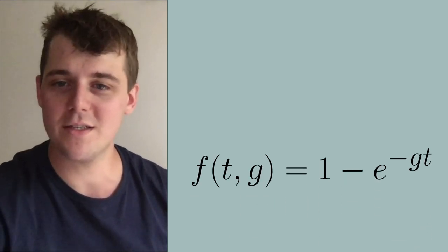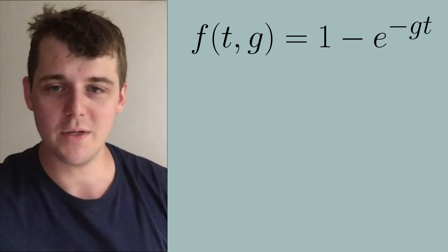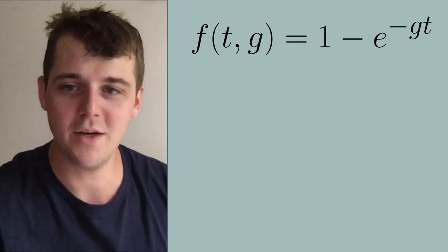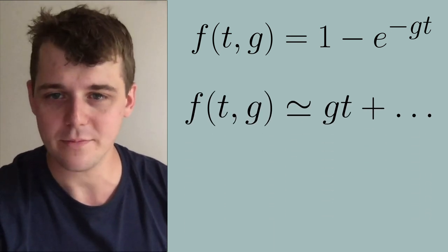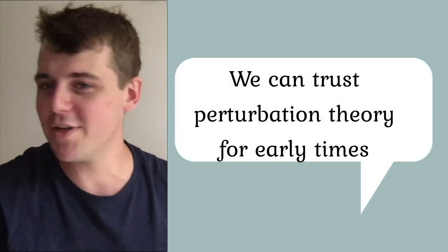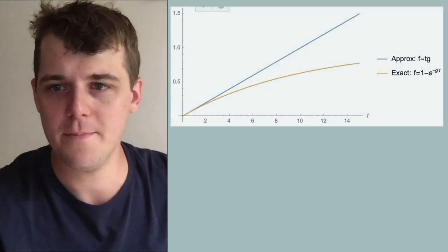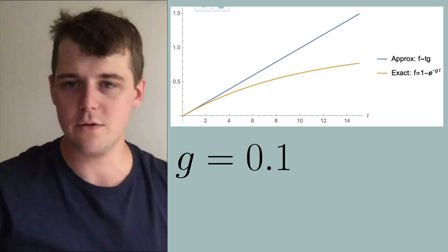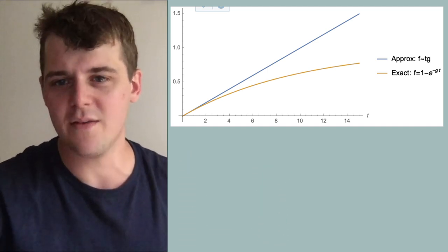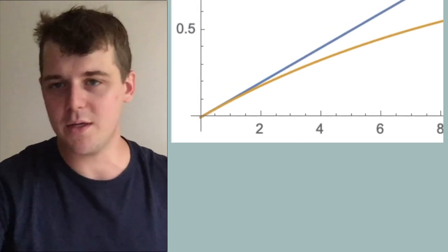I've cooked up this problem to be very simple. The exact solution is 1 - e^{-gt}, which has exponential damping. When g·t is small, we can expand this and to leading order we get something that goes like g·t. Perturbation theory is basically giving us the Taylor series of the exact solution. In this plot, the exact solution is the orange line showing exponential decay, while the perturbative approximation is a straight line with slope g. They match well at early times but depart quickly for late times.